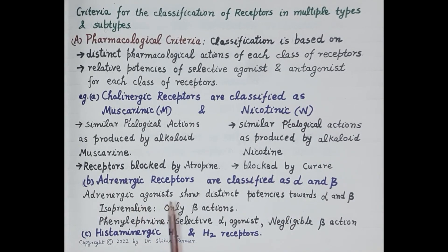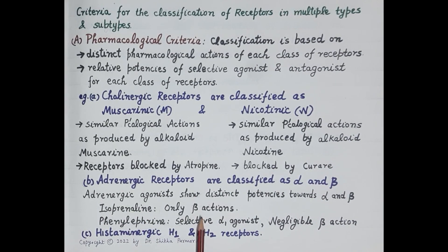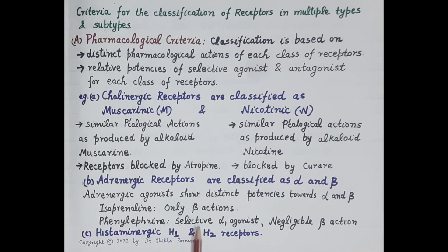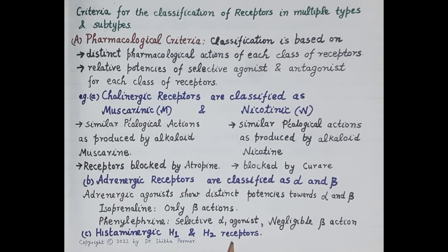Adrenergic agonists show distinct potencies towards alpha and beta receptors. For example, isoprenaline is a beta agonist and shows actions only on beta-1, beta-2, and beta-3 receptors. Phenylephrine is a selective alpha-1 agonist and shows negligible beta actions. Histaminergic H1 receptors are blocked by chlorpheniramine, while H2 receptors are blocked by antagonists like cimetidine and ranitidine. This is the pharmacological criterion — the oldest and most classical criterion for classification of receptors.